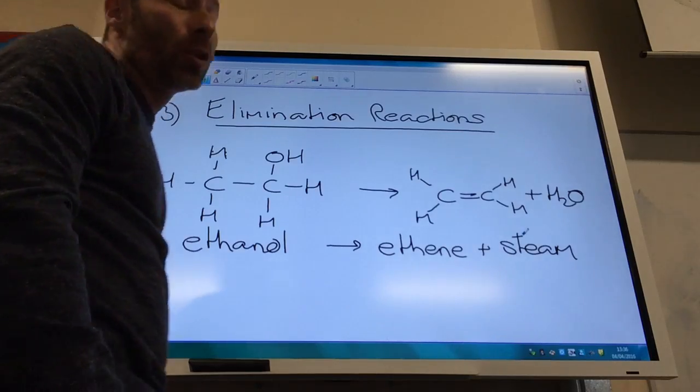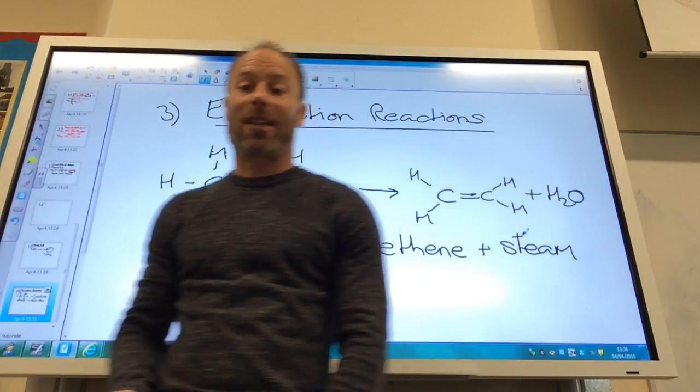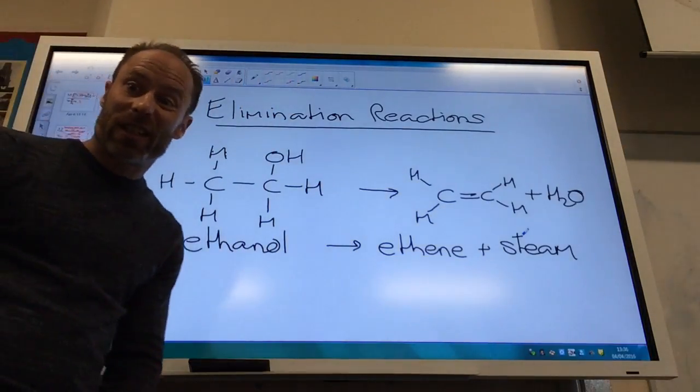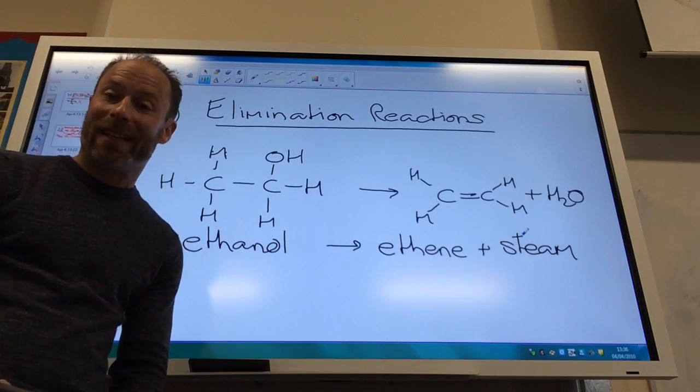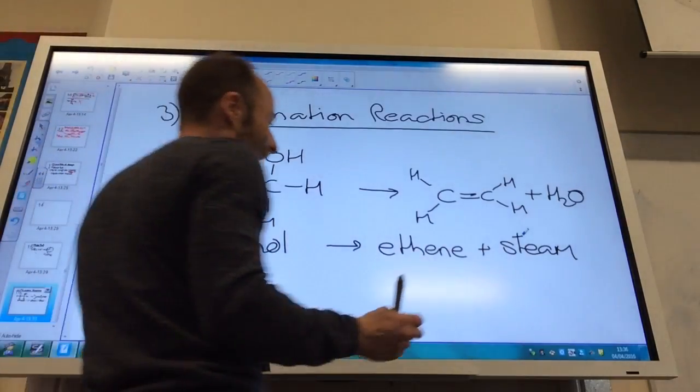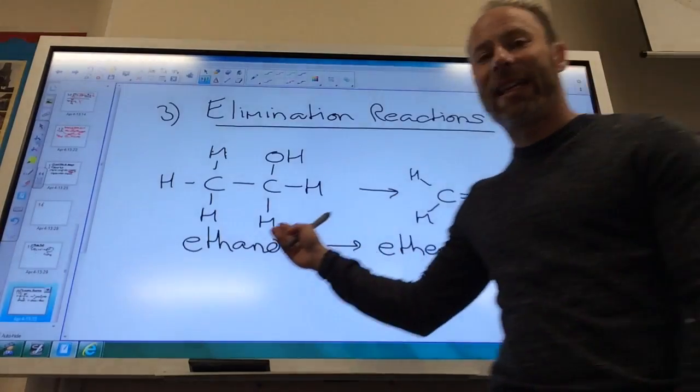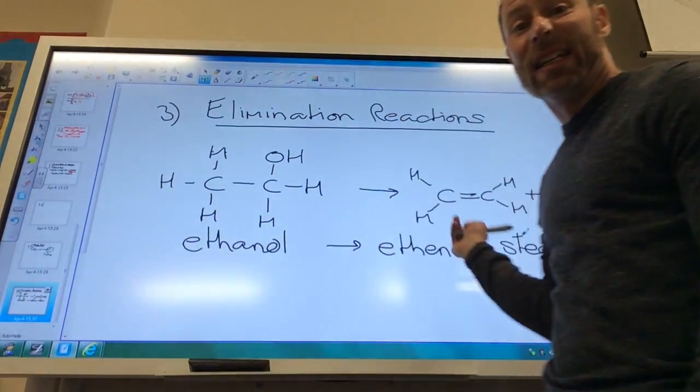Okay, so we can go back now to our third type of reaction of the alcohols and that's elimination reactions. Now hopefully you can see this is a reverse of how we make the alcohols. So we made alcohols industrially by taking ethene and steam and making ethanol. Here we're taking ethanol and making ethene and steam.